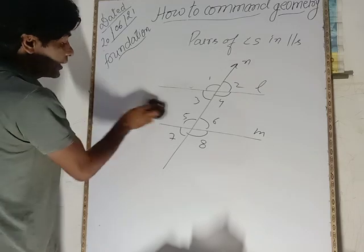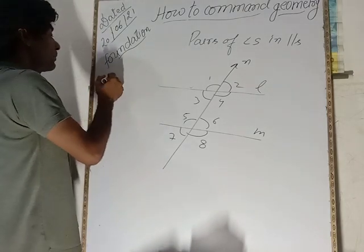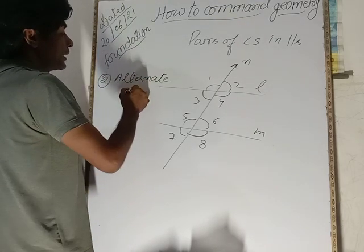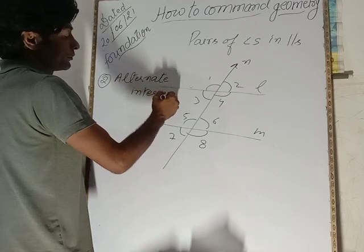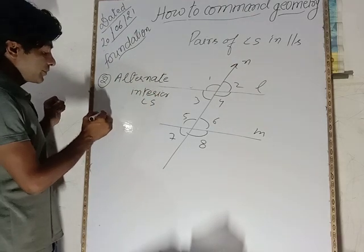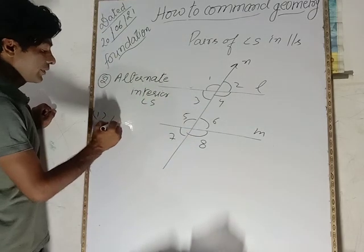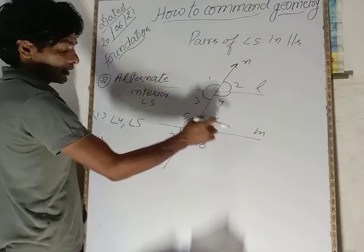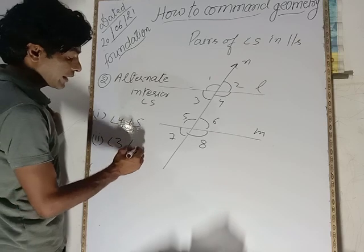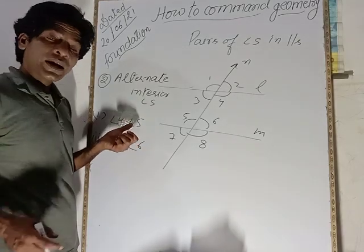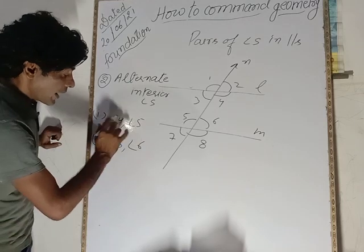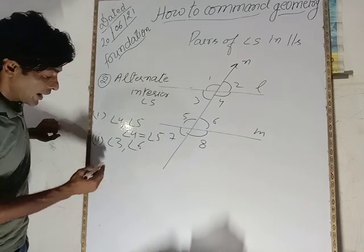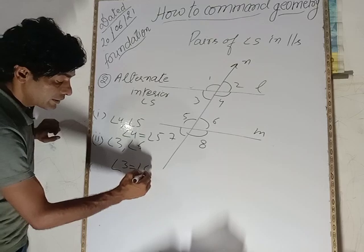The second pair is alternate interior angles. The two pairs are: angle 4 and angle 5, and angle 3 and angle 6. The characteristic property is that these are equal — angle 4 = angle 5, and angle 3 = angle 6.